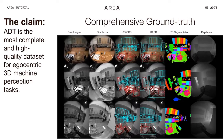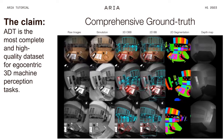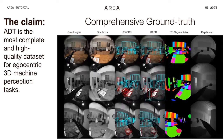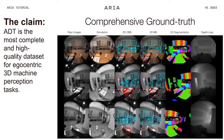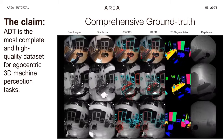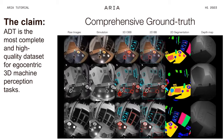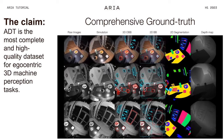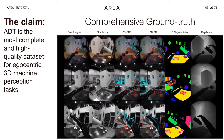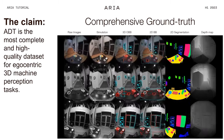Here is the claim: the ARIA Digital Twin is the most complete and high-quality dataset for egocentric machine perception tasks. Comprehensive and complete means that in these two spaces, we have complete ground truths of everything — including the environment, the objects, the state of everything, and even humans. Comprehensive also means we derive all types of ground truths that are meaningful for egocentric machine perception tasks.